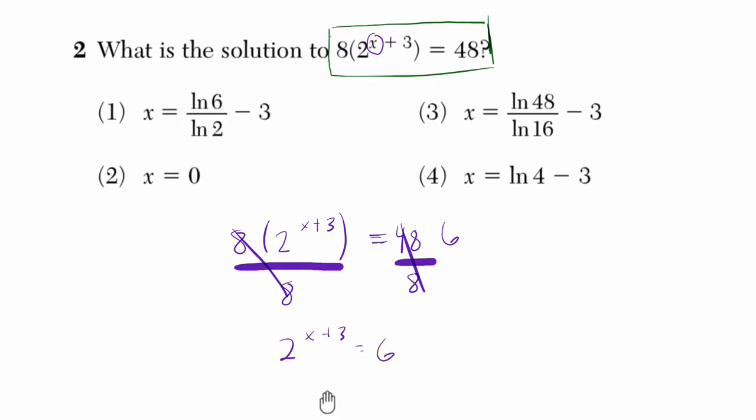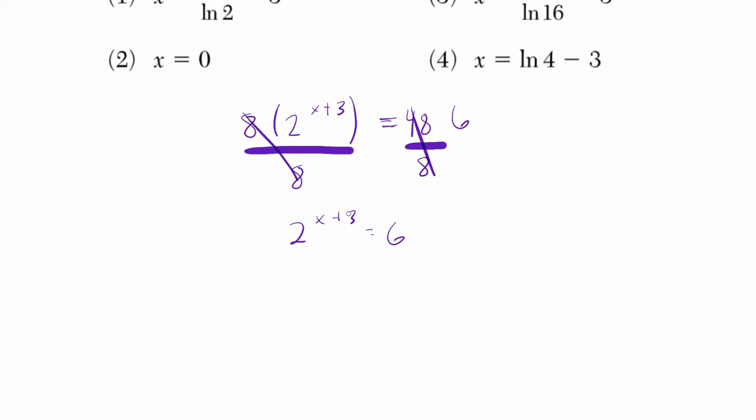And then we have 2 to the x plus 3 equals 6. Now at this point, we can solve for our exponent by taking the logarithm of both sides. And in order to do that, I'm going to take the log base 2 of both sides. Log base 2 of this term equals, on this side, the log base 2 of 6.